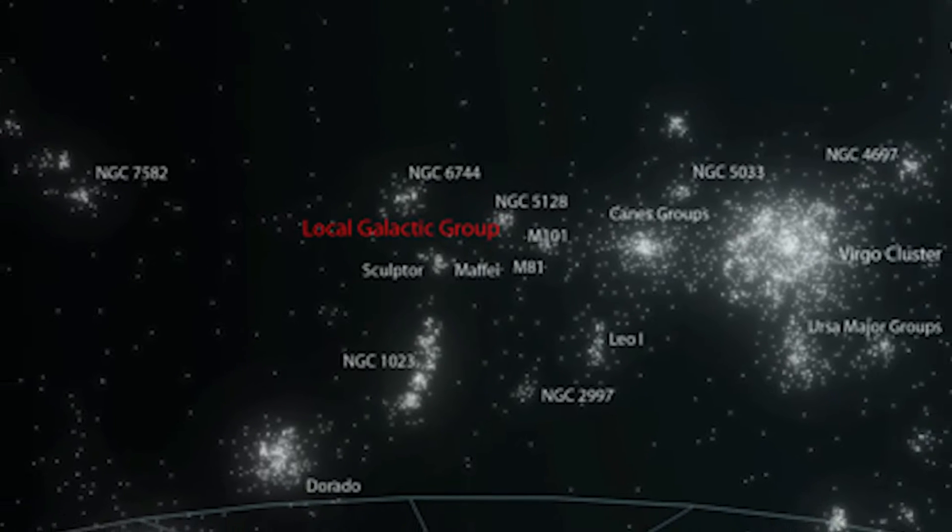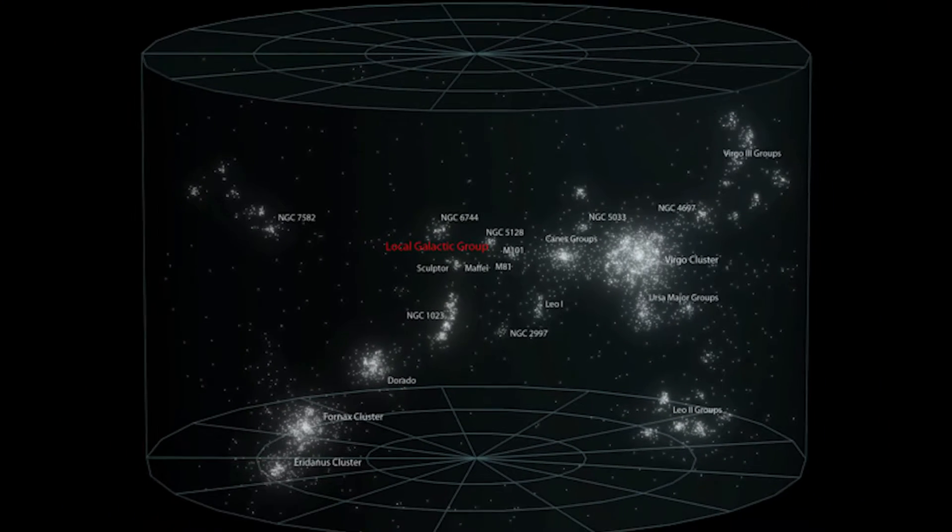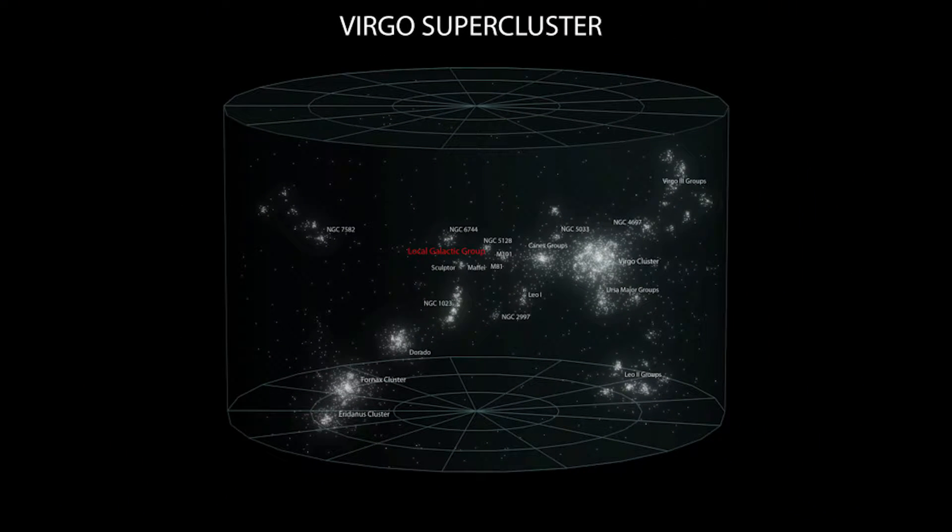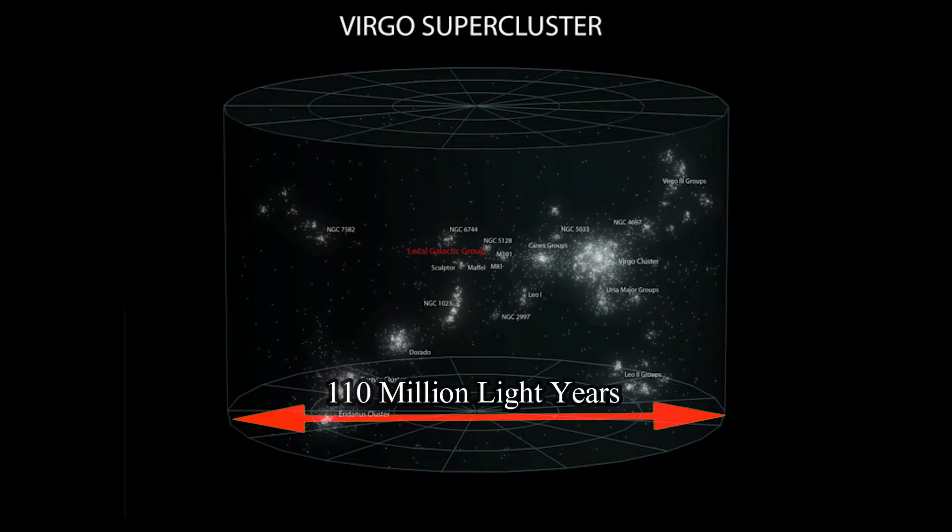The Galactic Group is part of an even bigger group of galaxies known as the Virgo Supercluster. The Virgo Supercluster spans across a total distance of 110 million light years and contains the Milky Way Galaxy and at least another 100 galaxy groups.